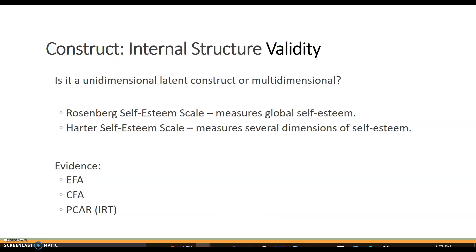Also within construct validity, we then talk about internal structure validity. And this is quite literally looking at dimensionality. We cannot just assume that because we're measuring self-esteem, self-esteem just is a unidimensional construct. Maybe, maybe not. If we're using the Rosenberg self-esteem, this actually measures global self-esteem and is unidimensional. The Harter self-esteem scale, though, measures several dimensions of self-esteem and is therefore multidimensional. Evidence for this is our EFA-CFA. And if we're in IRT models, it's the principal component analysis, the PCAR.